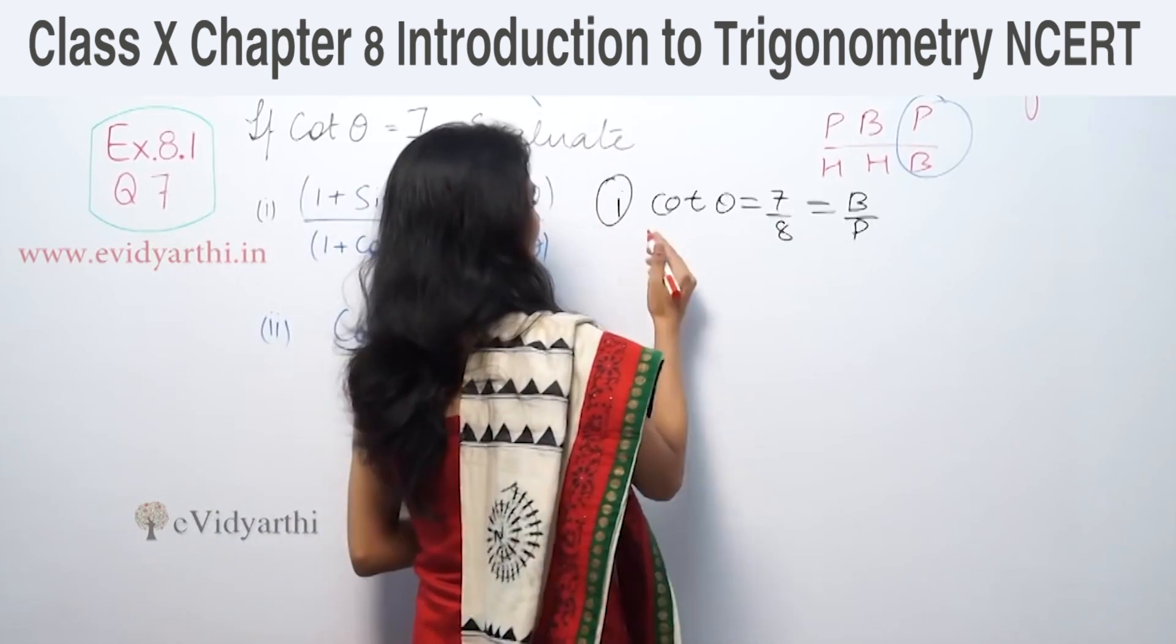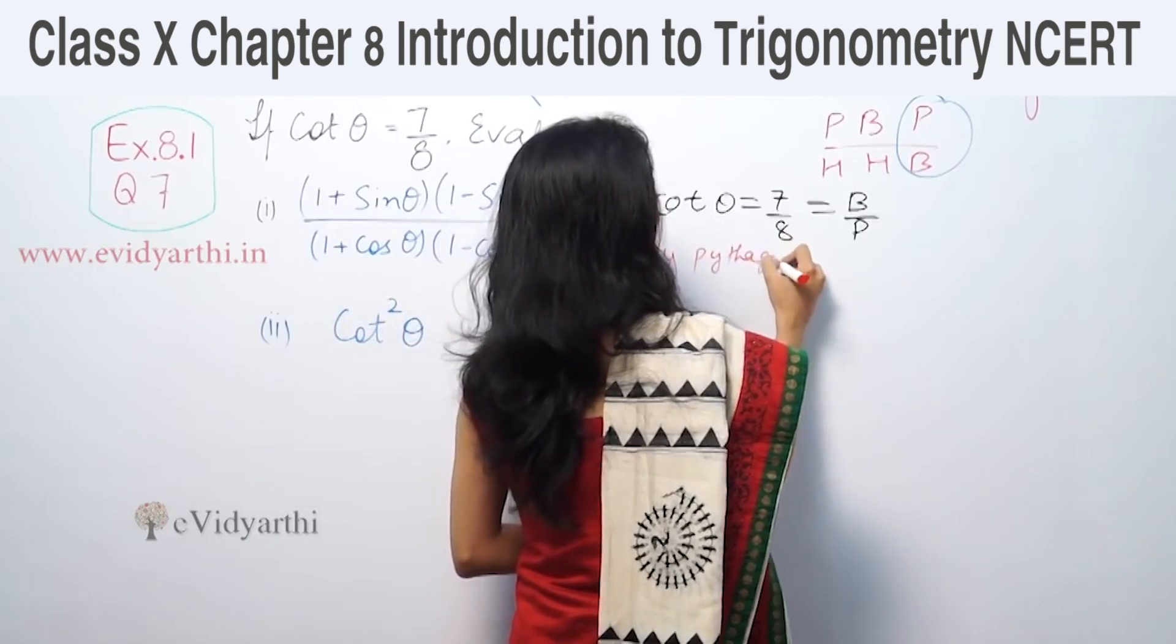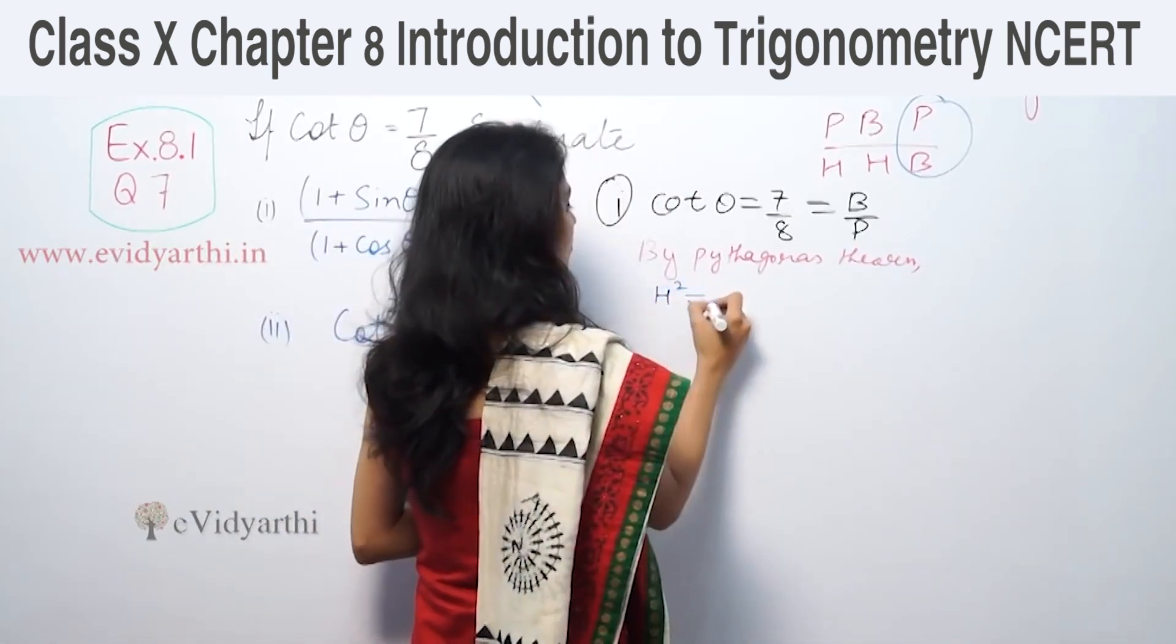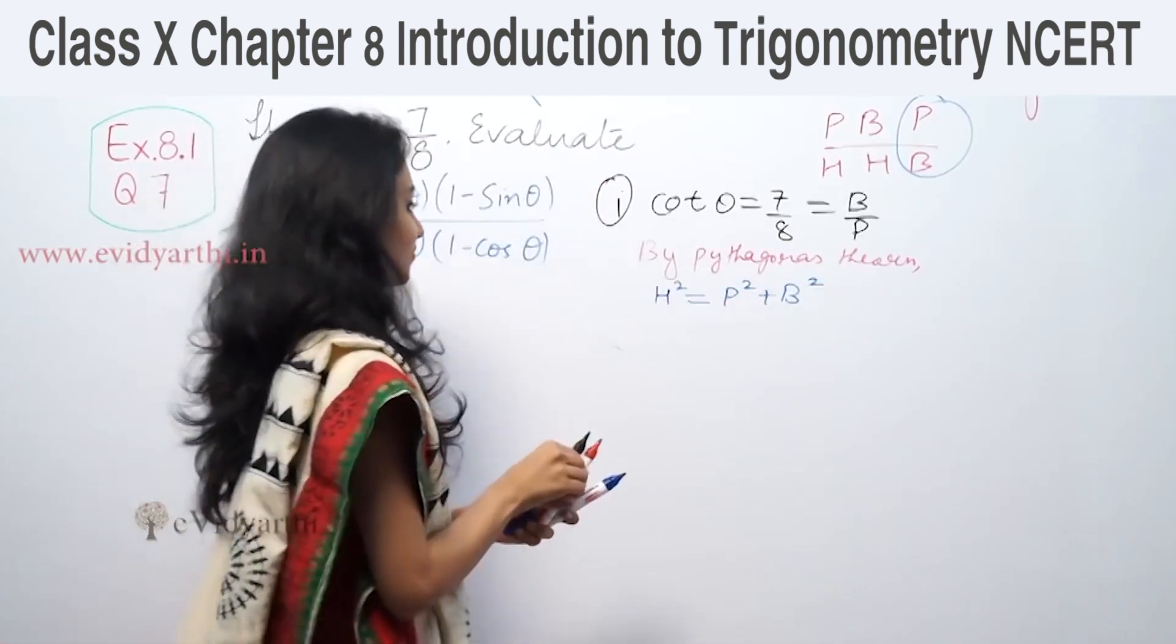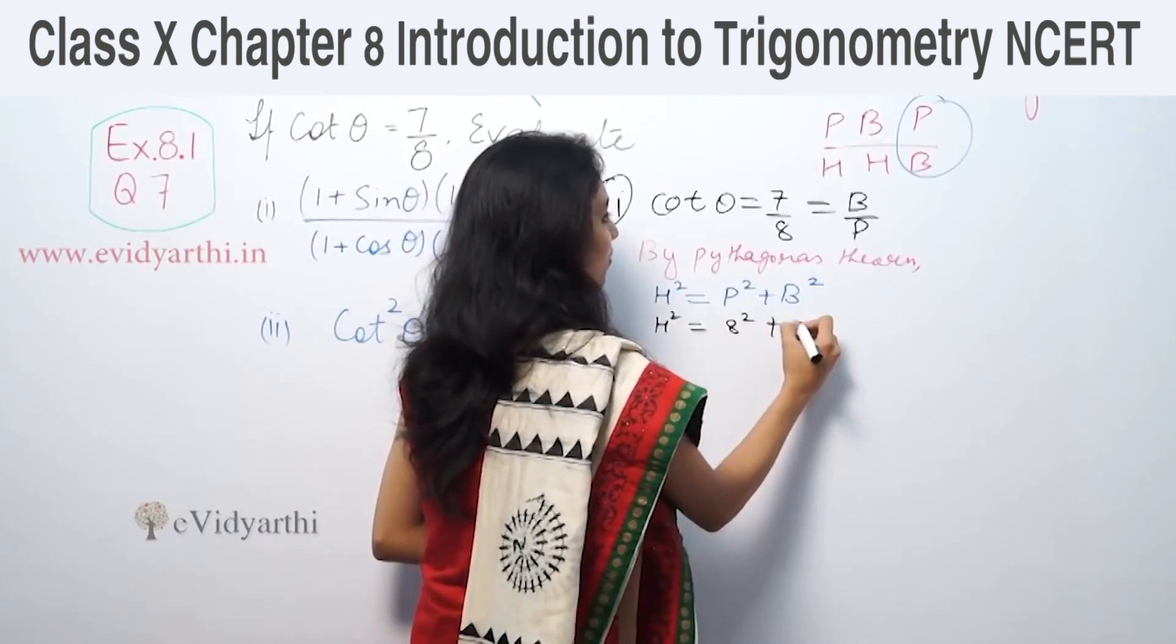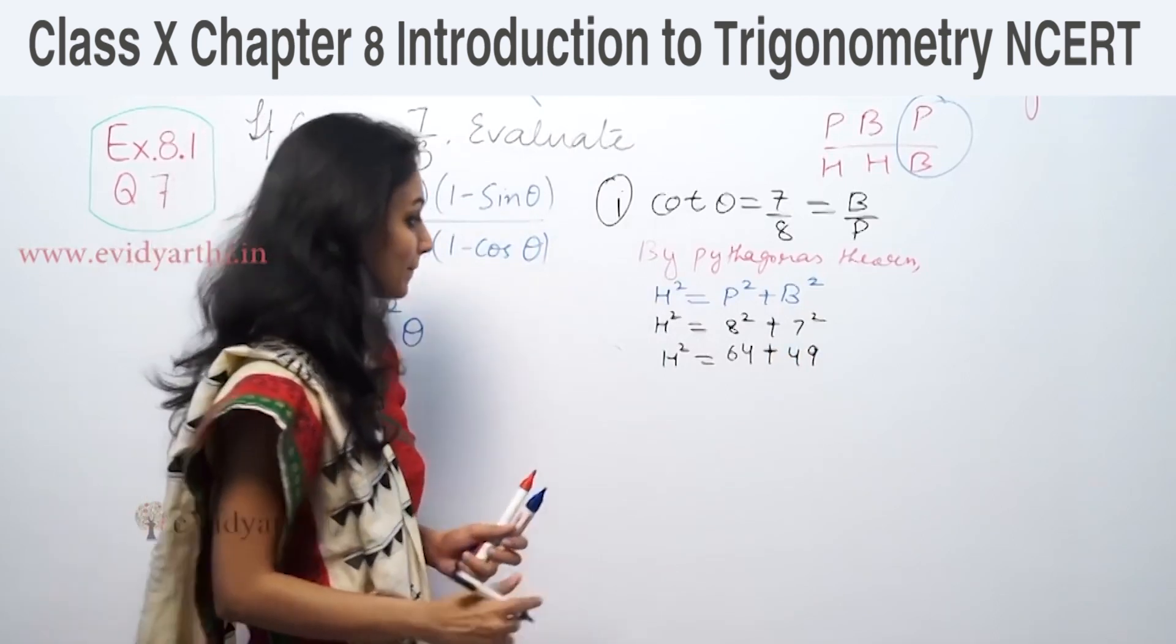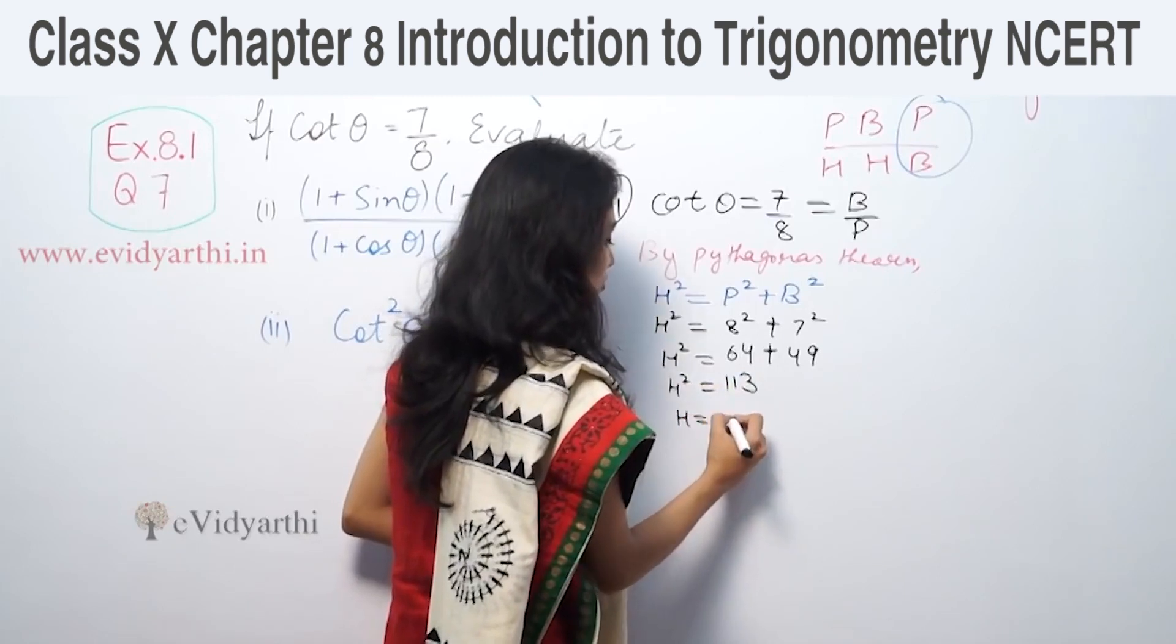By Pythagoras theorem, h² equals p² plus b². So h² equals 8² plus 7². h² equals 64 plus 49, so h² equals 113, therefore h equals √113.